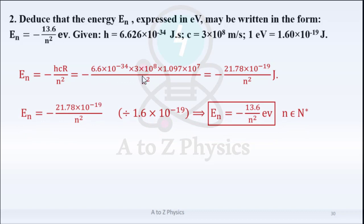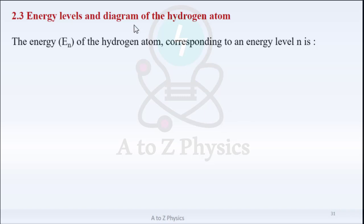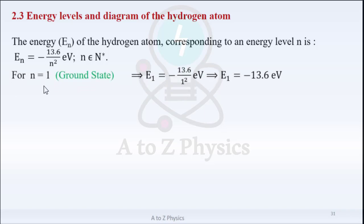Replacing H, c, and R, we get EN = −21.78×10⁻¹⁹/N² joules. Converting into electron volts, we get EN = −13.6/N² electron volts. The energy EN of the hydrogen atom corresponding to energy level N is EN = −13.6/N² eV.